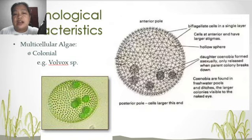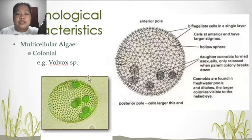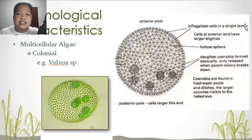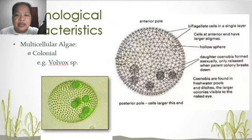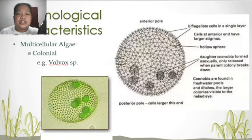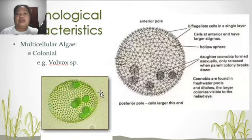In terms of multicellular algae, we have the colonial type, especially volvox. The volvox, if we label its parts, has biflagellated cells in a single layer — these flagellated cells form together as one organism, and the cells at the anterior end have larger stigmas. Inside the outer sphere, we have small circular cells, which are daughter colonies called gonidia, formed asexually and only released when the parent colony breaks down. This is volvox, found in freshwater pools and ditches, with larger colonies visible to the naked eye.